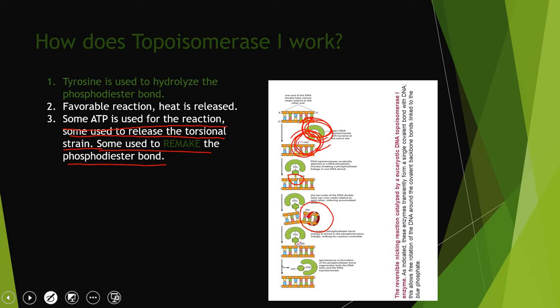With the rest of the energy left over - not all the energy is used - some is reserved to remake that bond. Once it's turned over and relieves that strain, it remakes that bond, and boom. Now you have this ladder structure.